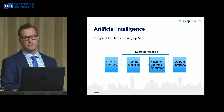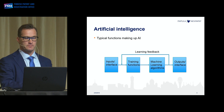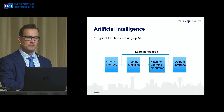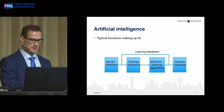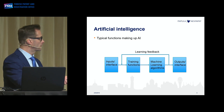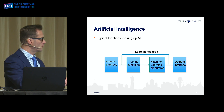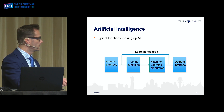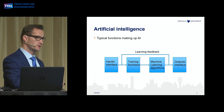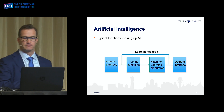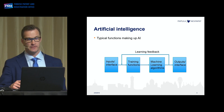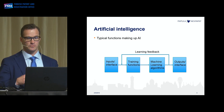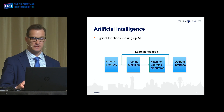This was already discussed earlier, but I simplified what artificial intelligence is. Typically you have an input and an output, and in between you have some kind of training functions and then machine learning algorithms. That's a simplification — as we saw earlier from Bruce, you can have other types of logic as well.